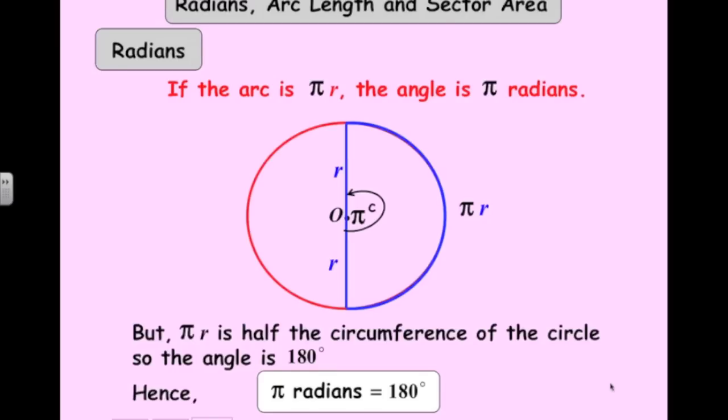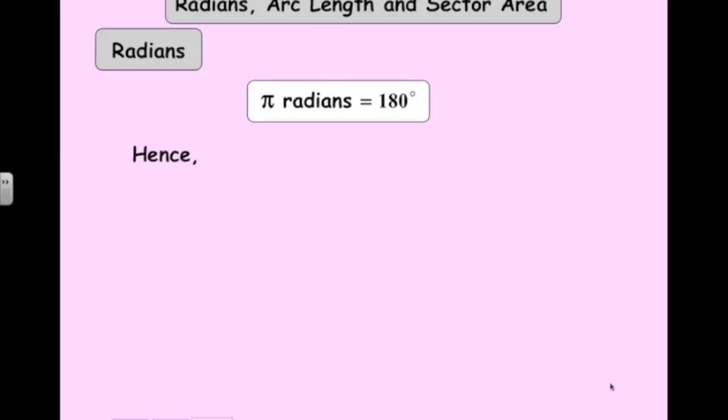So pi radians is 180 degrees. So one radian dividing both of those sides of this equation by pi is 180 over pi degrees, which is around about 57.3 degrees.